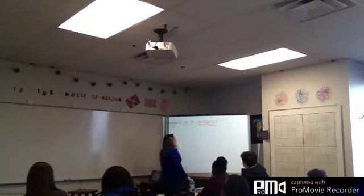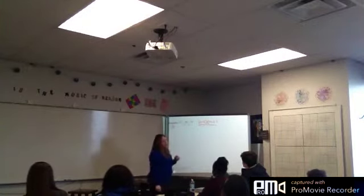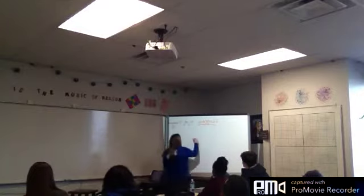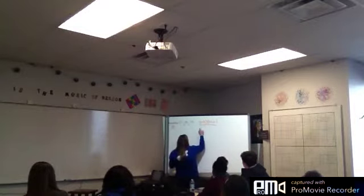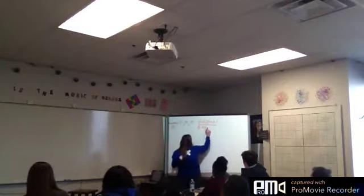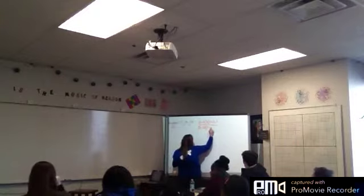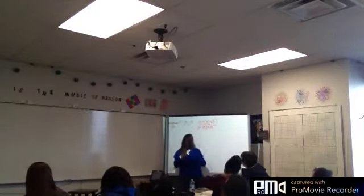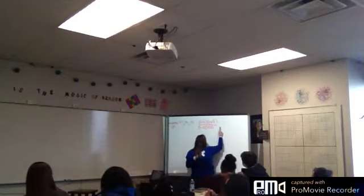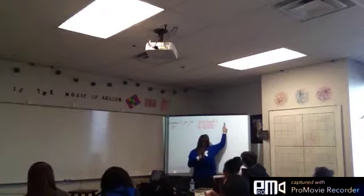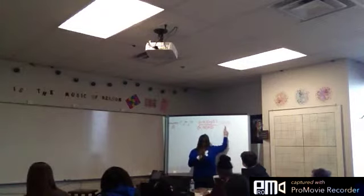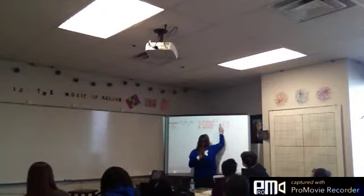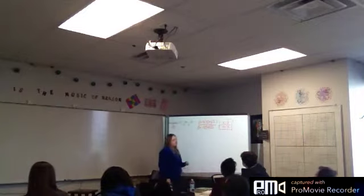How does x squared minus 9 factor out? That's x minus 3 times x plus 3. These cancel, and I get x minus 5 over x minus 3. That is my simplified answer.